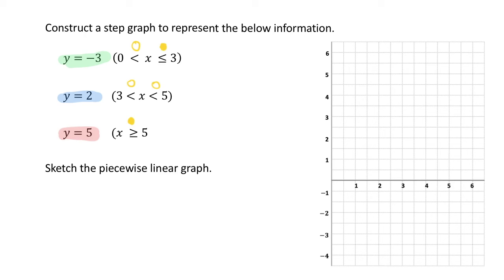Now that we've worked out which endpoints are solid and which are empty, we can start graphing. For the first line, y equals negative three between x equals zero and three, we go down to negative three on the y-axis and draw the line, placing an empty dot on one end and a solid dot on the other. For the second line, y equals two between x equals three and five, we go up to y equals two and draw the line, adding two empty endpoints.